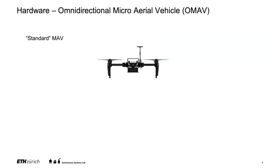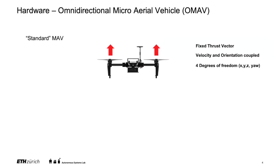Regarding hardware for manipulation: standard micro aerial vehicles (MAVs) can only create a single thrust vector vertically upwards — perpendicular to their plane — which means velocity and orientation are coupled, giving only four degrees of freedom. If we want to move sideways, we always need to create a thrust difference to generate roll or pitch.